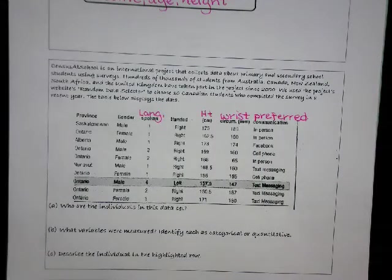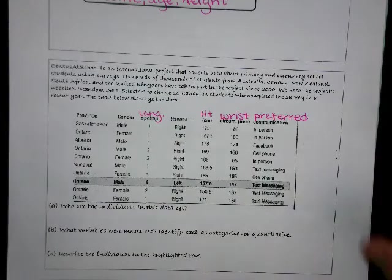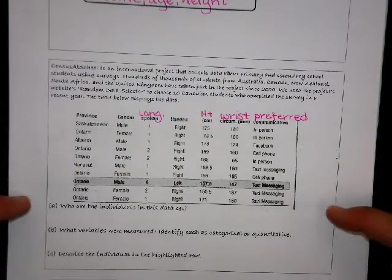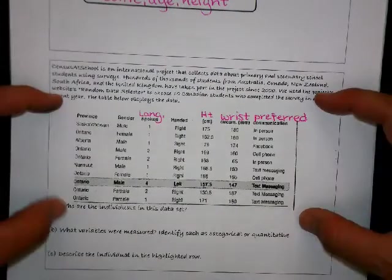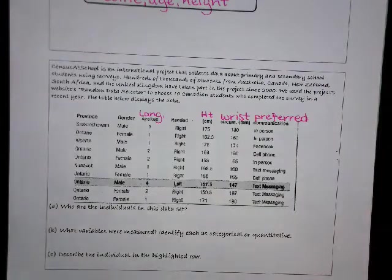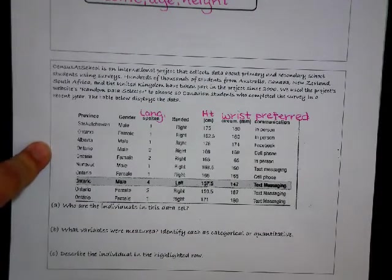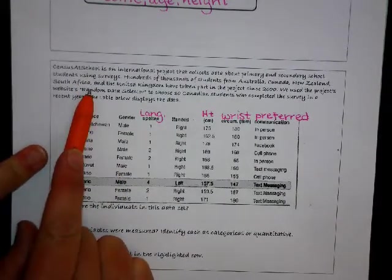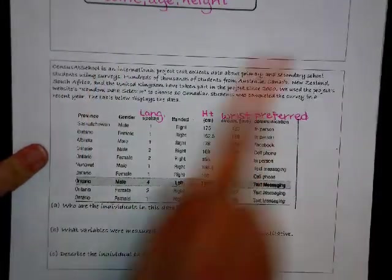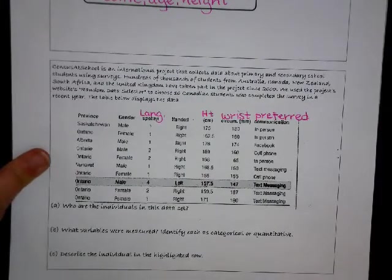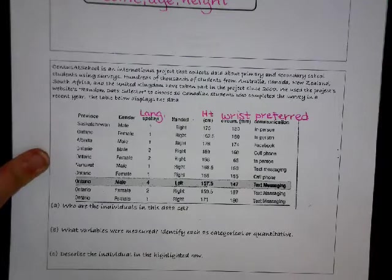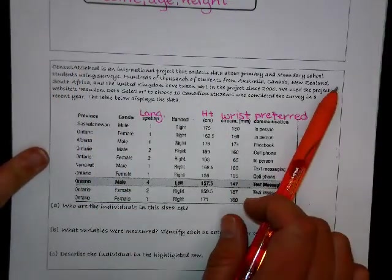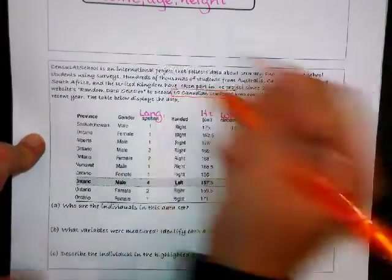Alright so down below we have three questions we're going to use the table to answer. So the first question is who are the individuals in this data set. The answer is actually up in the paragraph. It tells us that we chose 10 Canadian students and those are the individuals that are described by the data set.